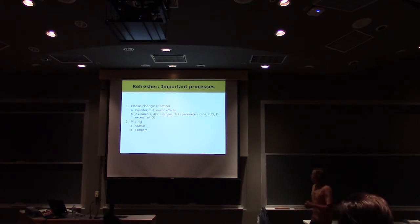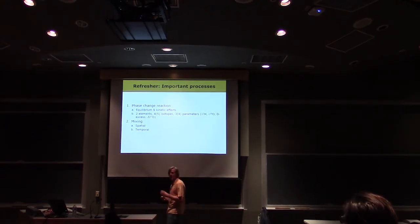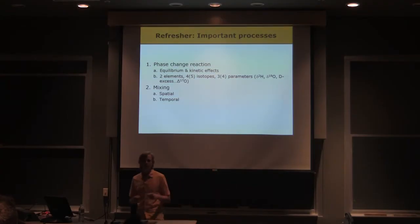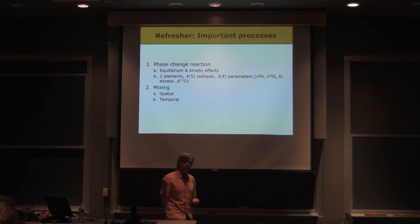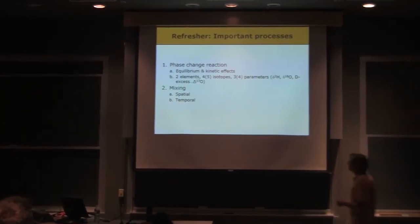So ultimately, we have traditionally three parameters. The hydrogen isotope composition, delta 2H, oxygen isotope ratio, ratio of 18-O to 16-O, and then a derived parameter we'll look at called deuterium excess, which combines the two. And it looks at how the variation in oxygen isotopes and hydrogen isotopes is coupled or decoupled.